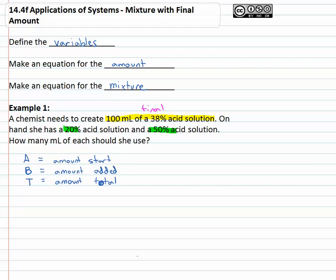Now percentage wise, we're told that the two solutions we start with, not the final, but A and B, the amount we start with and add are twenty percent or point two and fifty percent or point five.